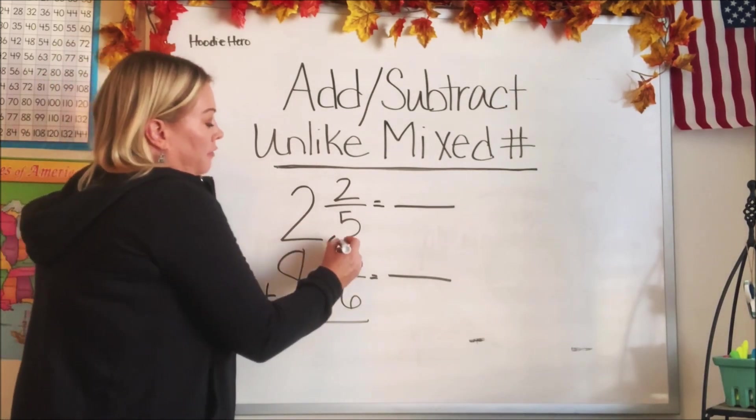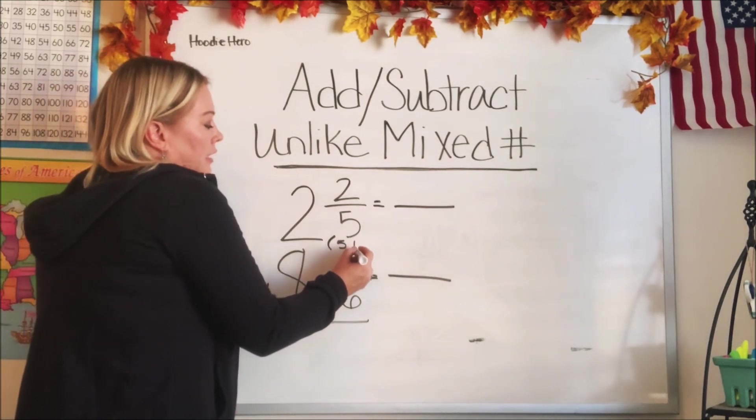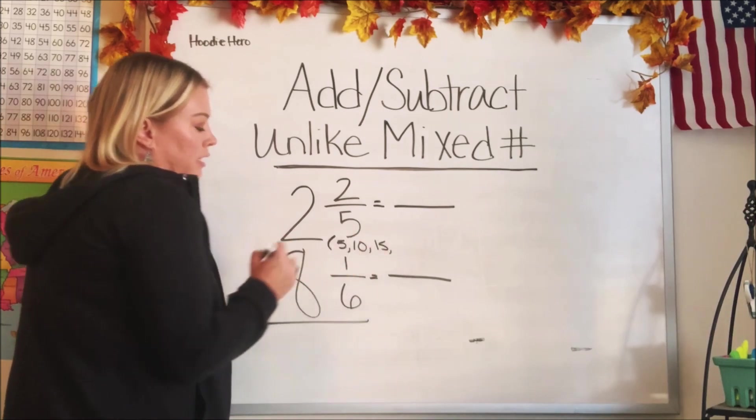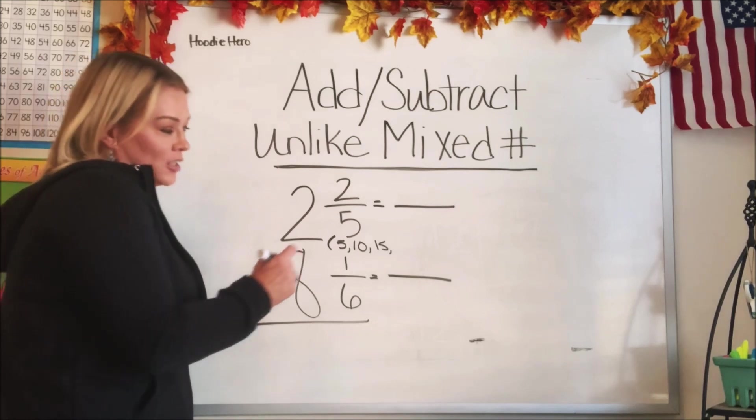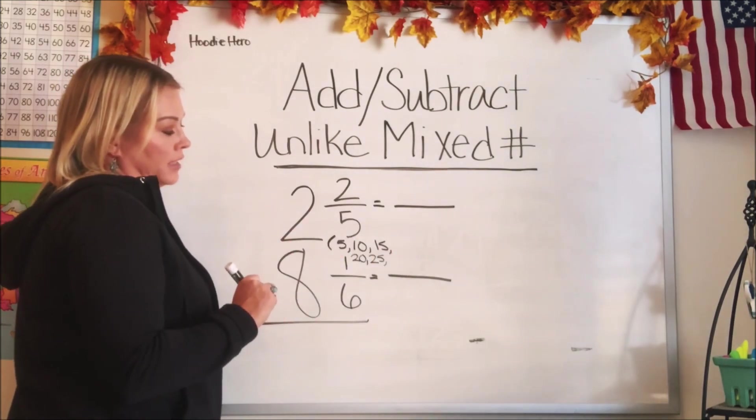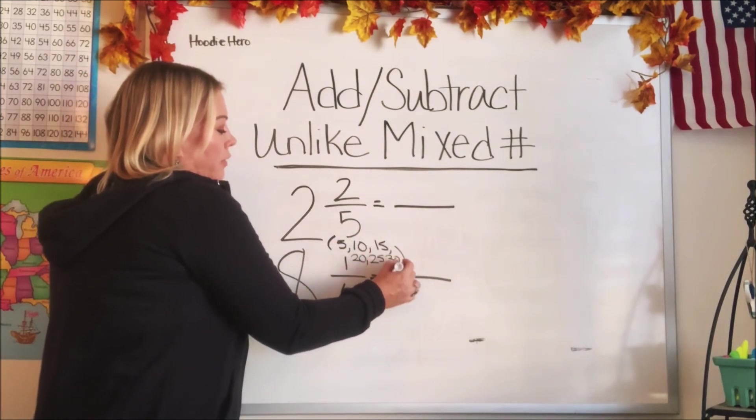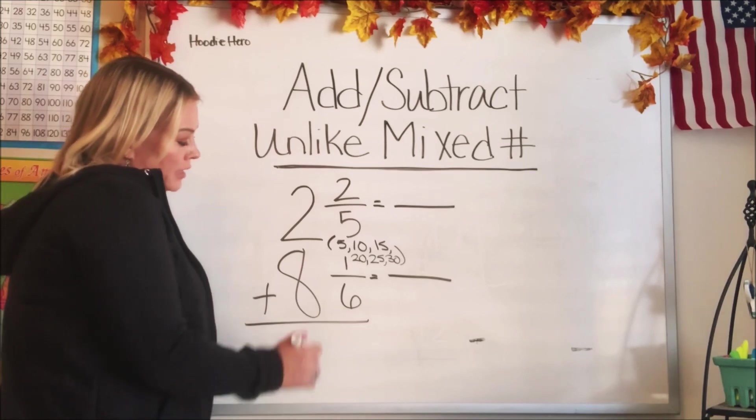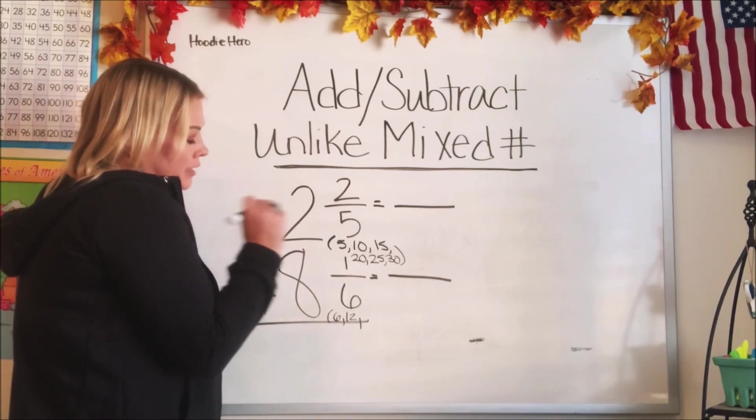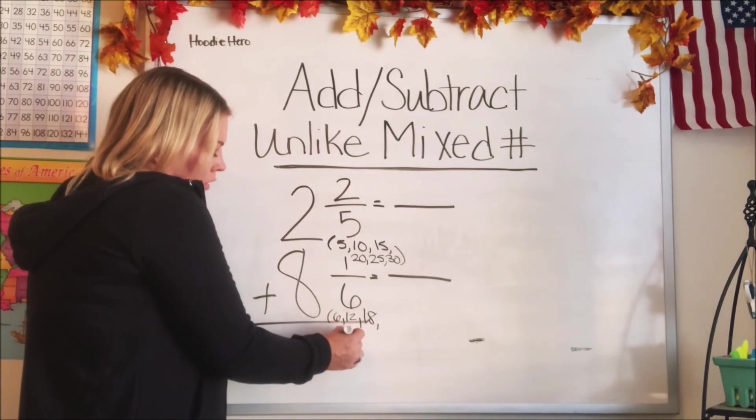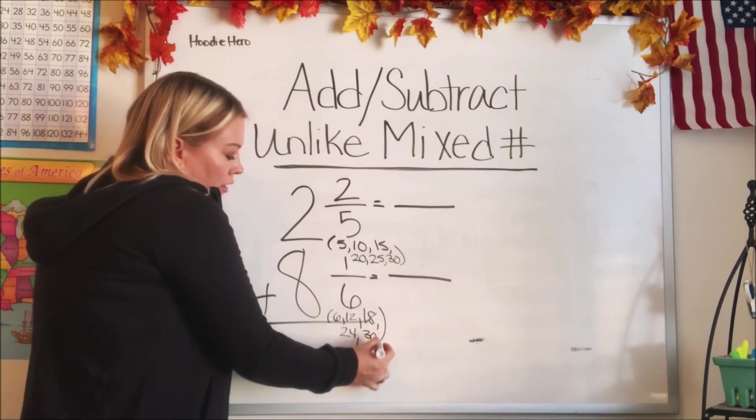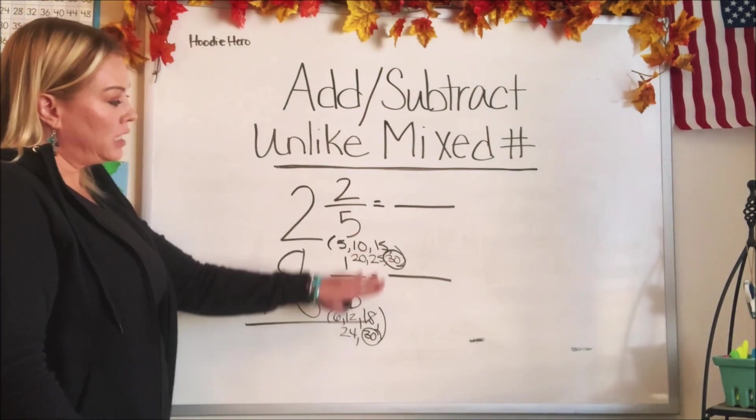Let's start with our multiples of the denominators to find out what our new denominator is going to be. So 5 times 1 is 5, 5 times 2 is 10, 5 times 3 is 15. I think we're going to need more with this one. We got to go a little higher. 5 times 4 is 20. 5 times 5 is 25. And one more. 5 times 6 is 30. We had to do a lot this time. Let's do the multiples of 6. 6 times 1 is 6. 6 times 2 is 12. 6 times 3 is 18. 6 times 4 is 24. Do we have anything in common yet? Let's keep going. 6 times 5 is 30. There she is. It's 30. That is the least common multiple.